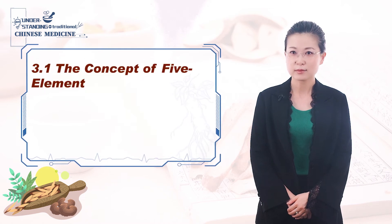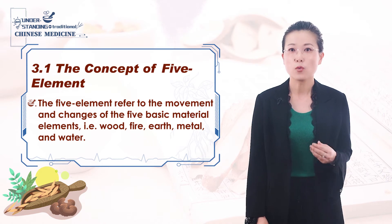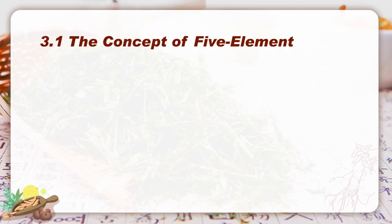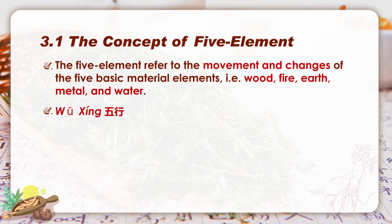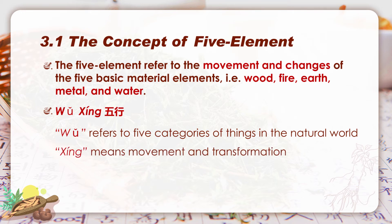The concept of five elements refers to the movement and change of the five basic material elements: wood, fire, earth, metal, and water. It is very important to know that the concept of five elements includes the five materials and their movements and changes. So if you are asked what the five elements are, your answer should be wood, fire, earth, metal, water, and their movements and changes. It may be easier to understand using the Chinese characters: WU XIN. WU refers to five categories in the natural world, and XIN means movement and transformation.